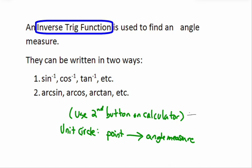That second button on the calculator gives you an angle measure. Here's the problem: the calculator will only interpret the angle measure as positive in the first quadrant. But a positive cosine could be in the first or fourth quadrant, and a positive sine could be in the first or second quadrant. So the calculator is a little limited — it may give you a reference angle but not the real answer. You have to be smarter than the calculator.